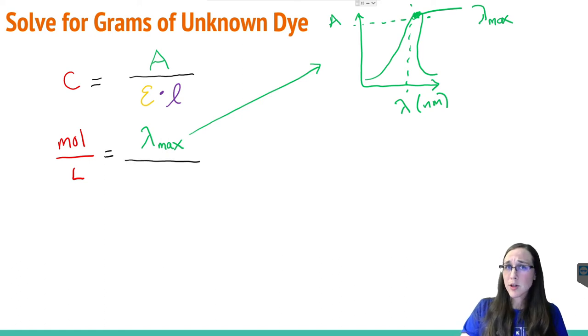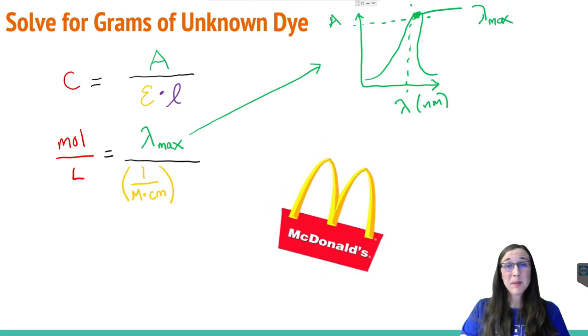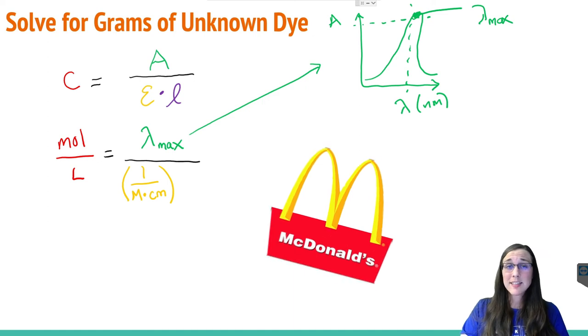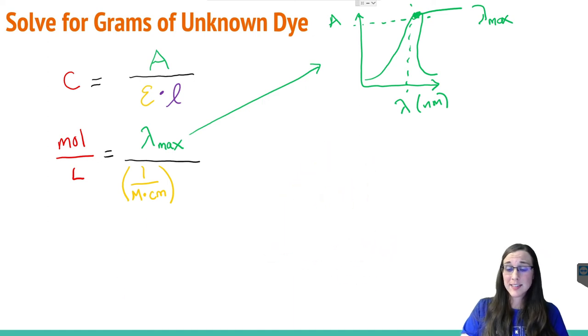The molar absorptivity or extinction coefficient E has units of one over molarity times centimeter. Since big M stands for moles per liter, this is essentially saying the same thing as liter over mole times centimeter for our epsilon units. This is of course multiplied by centimeters for the length of the cuvette.